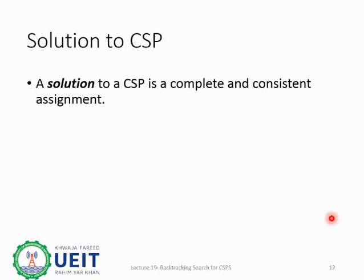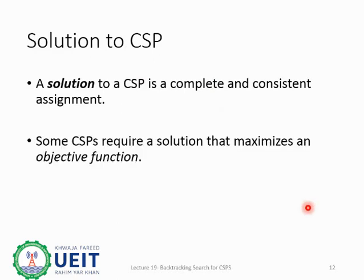We know what CSPs are, with variables, domains, and constraints. Now the question is: when is a solution to CSP found? A solution in CSP is when the assignment for all variables is both complete and consistent. If any variables are left unassigned, this is not a solution to CSP. However, some CSP problems require a solution that maximizes an objective function, similar to local search algorithms. Our discussion will remain focused on CSPs whose solutions depend on complete and consistent assignment.